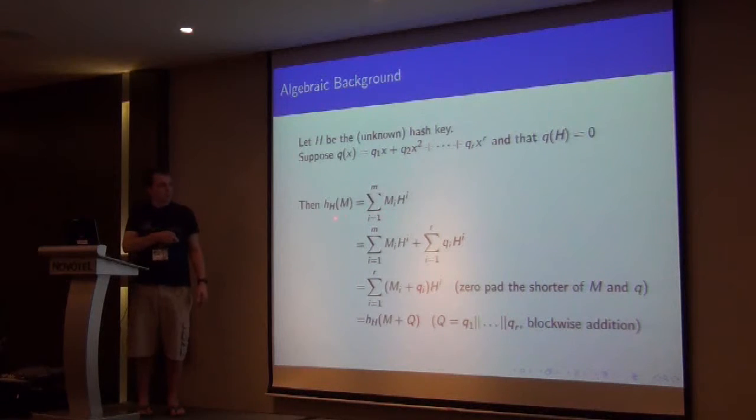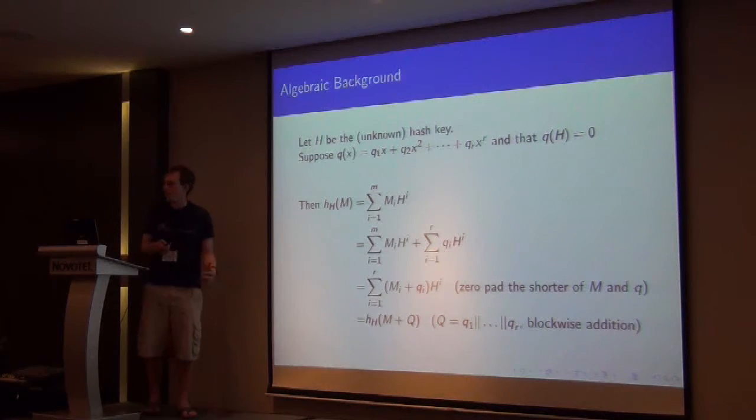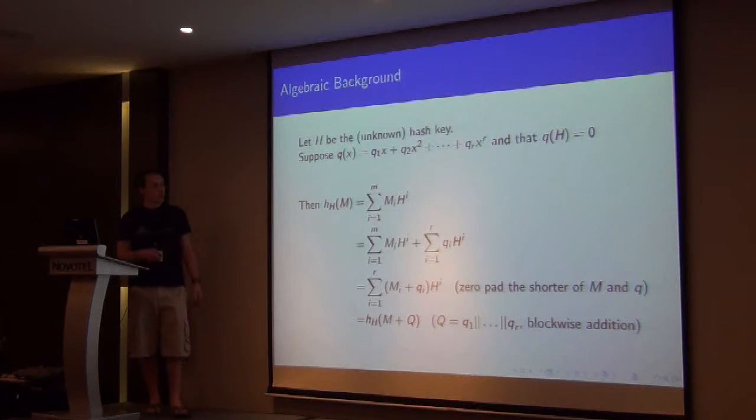And because q of h is 0, we can just add that on here, and that doesn't change anything. We've still got equality. If we collect all the like terms together, and we maybe zero out one of m and one of q, well, this bit here is just the hash of some other message, m plus q.